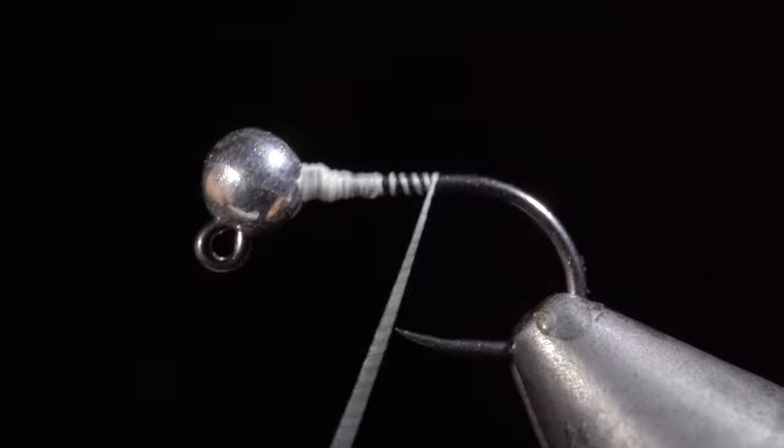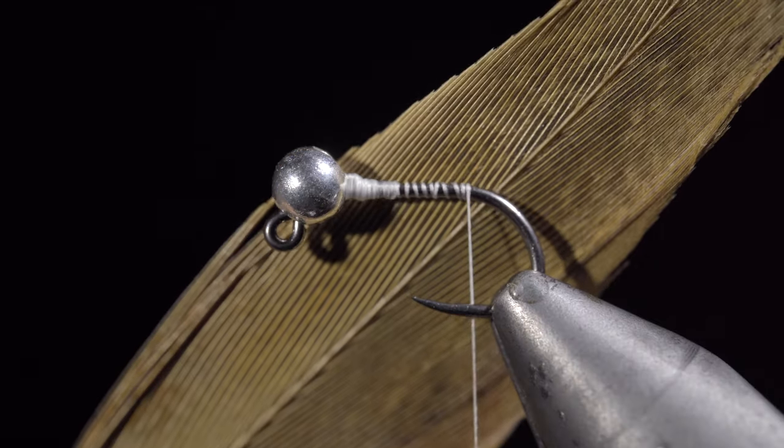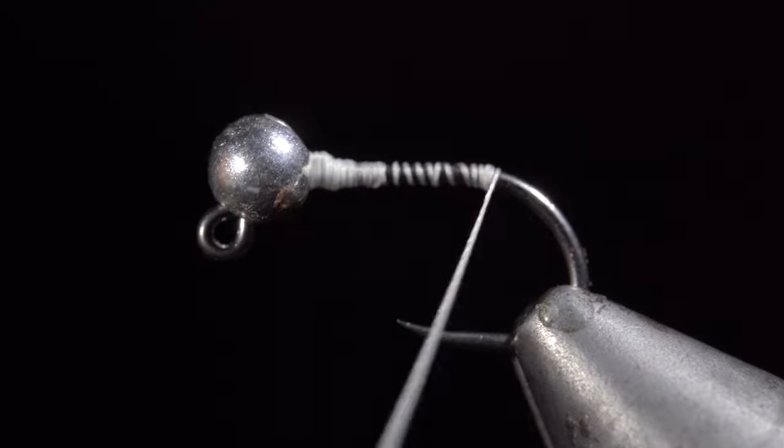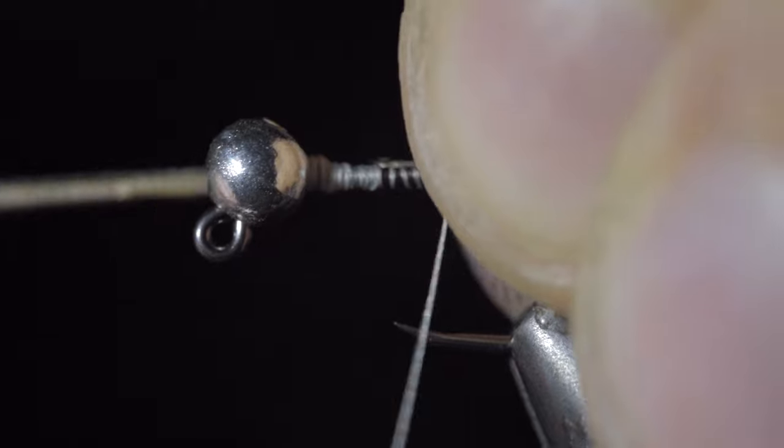We can then wrap to the back of the fly and grab some pheasant tail. Before we start, we will make a small build-up of thread on the back of the fly and then grab three fibers of pheasant tail.